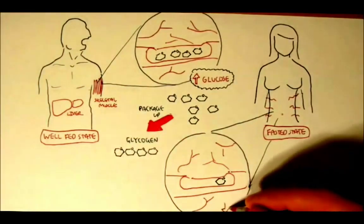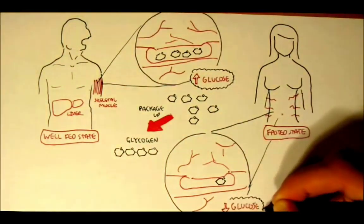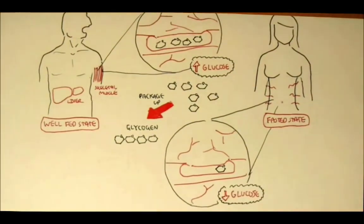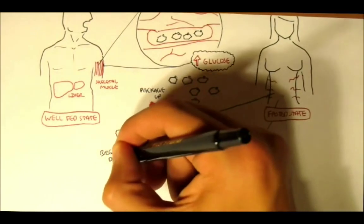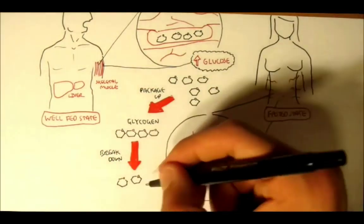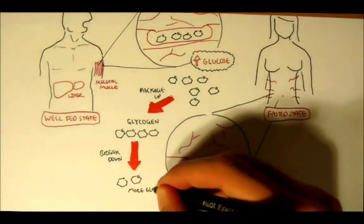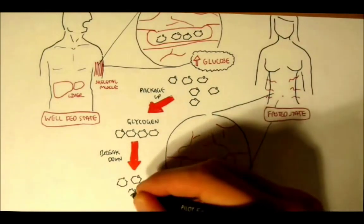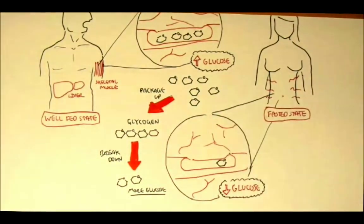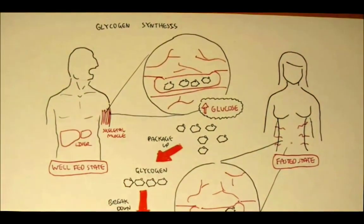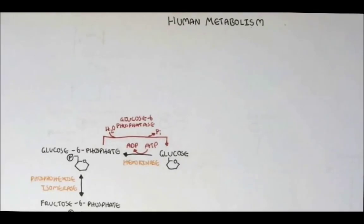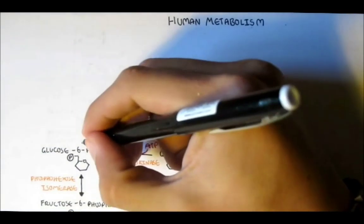So what happens in this fasted state is the liver, which is the main site of blood glucose regulation and helps keep it stable, well the liver will begin to degrade the glycogen to glucose, releasing into the bloodstream to keep blood glucose in equilibrium. That's glycogen.